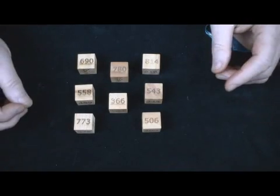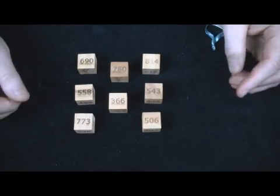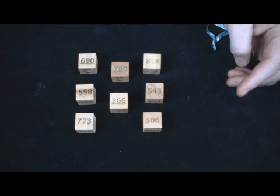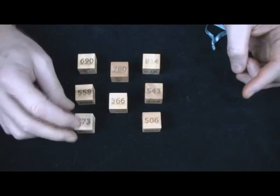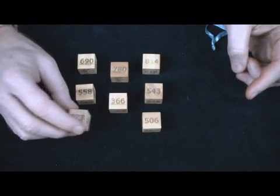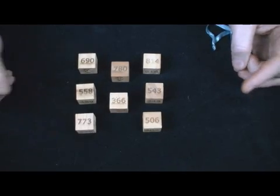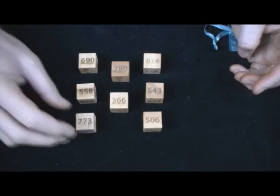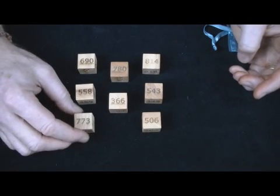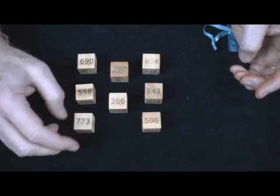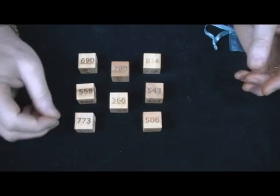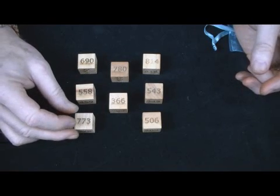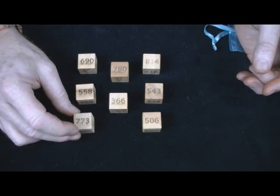The effect of the trick is that you roll the dice, and very quickly you are able to determine what the sum total of all these numbers are. Each number is different. No number is repeated. They're all three-digit numbers. So you're dealing with what seems like some very complex math to perform. But these dice have some particular qualities that allow you to do some things with it.